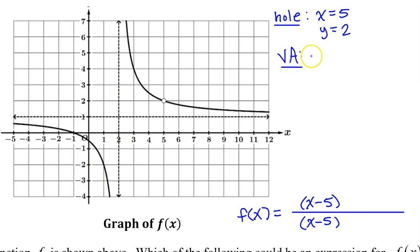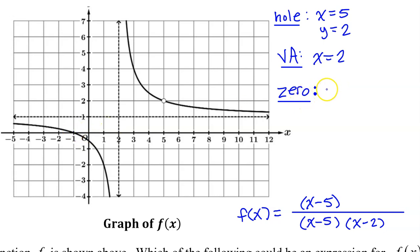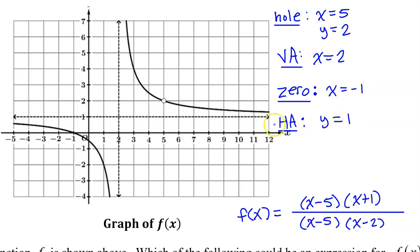We see that there is a vertical asymptote at x equals 2. That means we have a factor of x minus 2 in the denominator that does not cancel out with anything. We see that f of x has a zero at x equals negative 1 — it's the x-value of the x-intercept. So a zero at x equals negative 1 means a factor of x plus 1 in the numerator that does not cancel out with anything. Finally, we see there is a horizontal asymptote y equals 1. We get a horizontal asymptote that is a constant when the degree of the numerator and denominator are the same, and in that case the horizontal asymptote is the ratio of the leading coefficients.